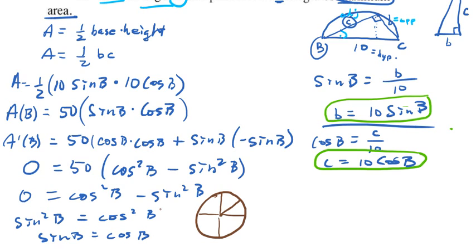So we're looking for the angle B where the sine of that angle and the cosine of that angle are the same. And of course, this angle has to be between 0 and 90 degrees.